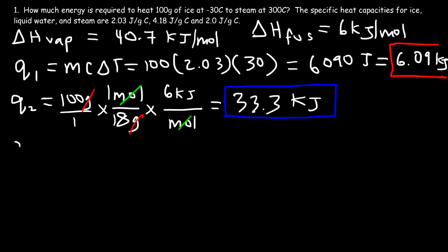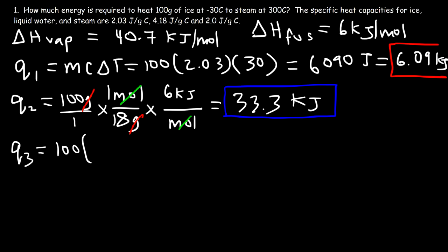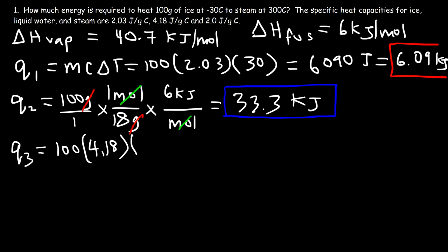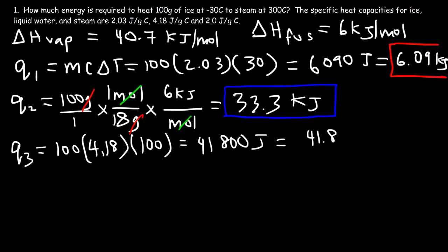For Q3, we use MC delta T again. The mass is still 100, but now we're dealing with liquid water, so the specific heat capacity is 4.18 joules per gram per Celsius. The change in temperature going from 0 to 100 degrees Celsius is 100. So it's 100 times 4.18 times 100, which equals 41,800 joules, or 41.8 kilojoules.